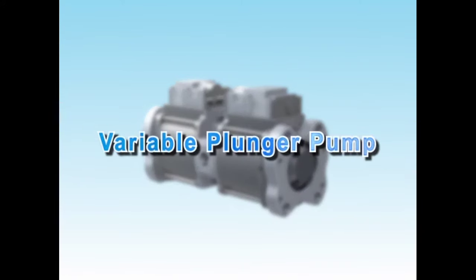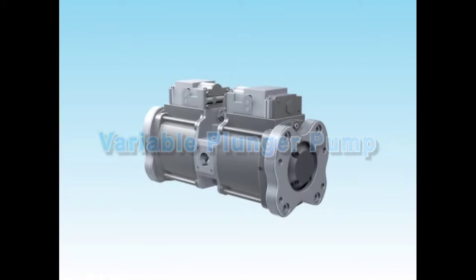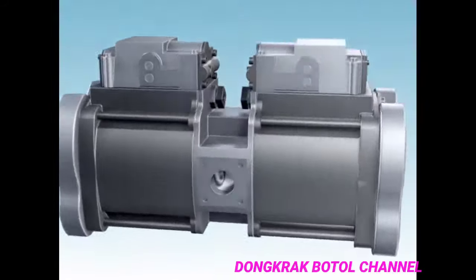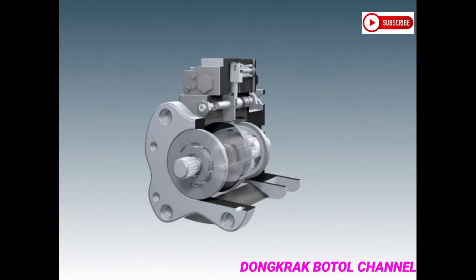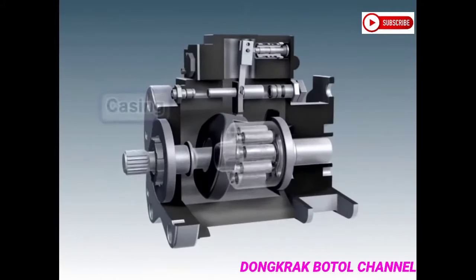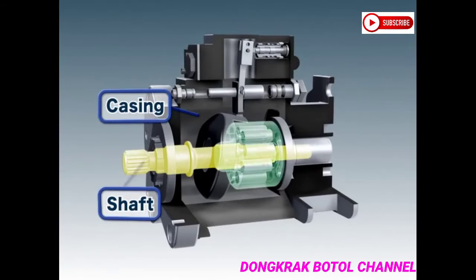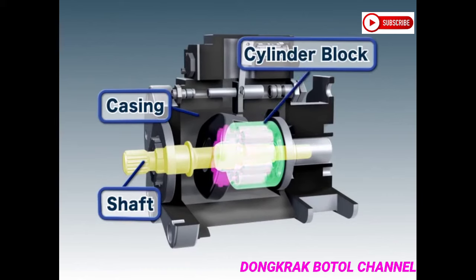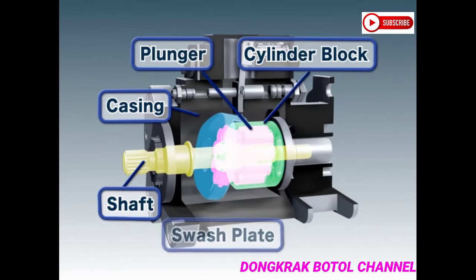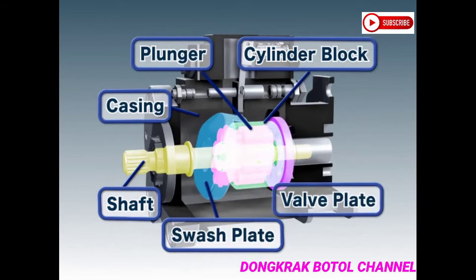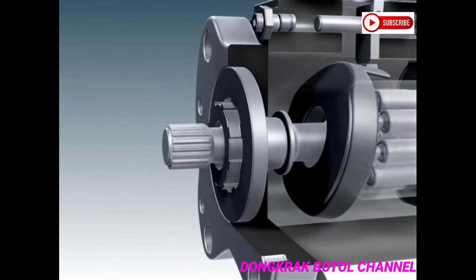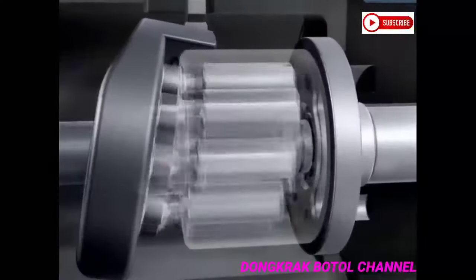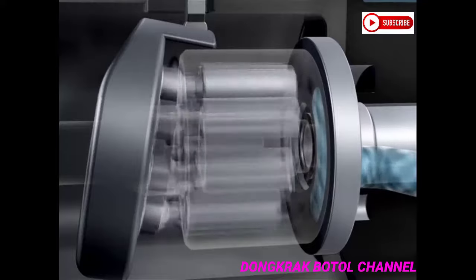The variable plunger pump is the driving force for the motor and other actuators, which highly pressurizes and delivers hydraulic oil from the tank. The pump is composed of a casing, shaft, cylinder block, plunger, swash plate, valve plate, and other components. As the shaft rotates, the plunger strokes along the swash plate, sucking and delivering hydraulic oil.